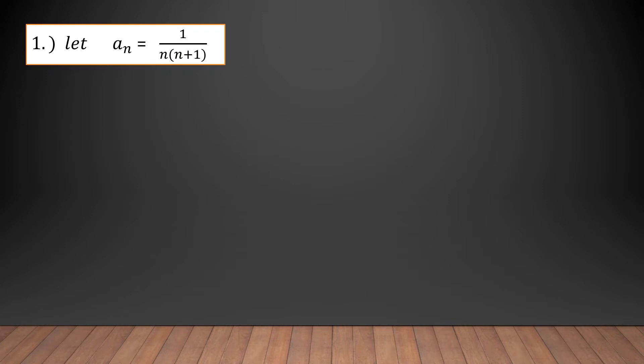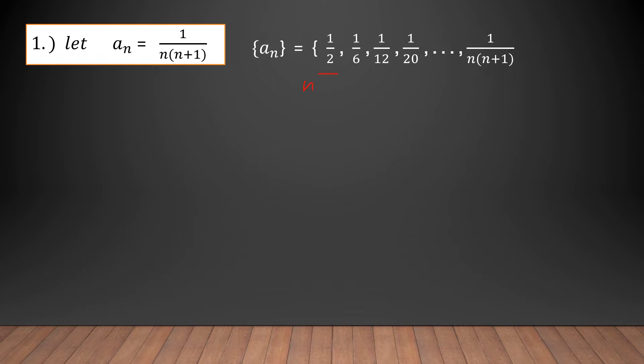Let us determine if the given series converges or diverges using the definition given. Let the sequence a_n equal 1 over n times (n plus 1). If we list the sequence terms, when n is 1 this gives us 1/2. When n is 2, substituting gives us 1/6.